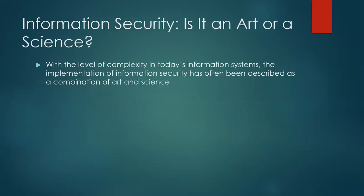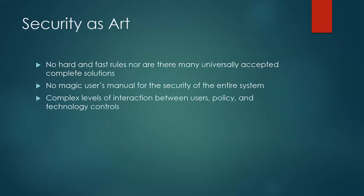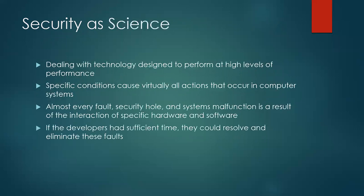Is information security an art or a science? Given the level of complexity in today's information systems, information security has often been described as a combination of art and science. Security as art: there are no hard and fast rules, nor are there many universally accepted complete solutions. There is no magic formula for the security of an entire system, given the complex level of interaction between users, policy, and technology controls.